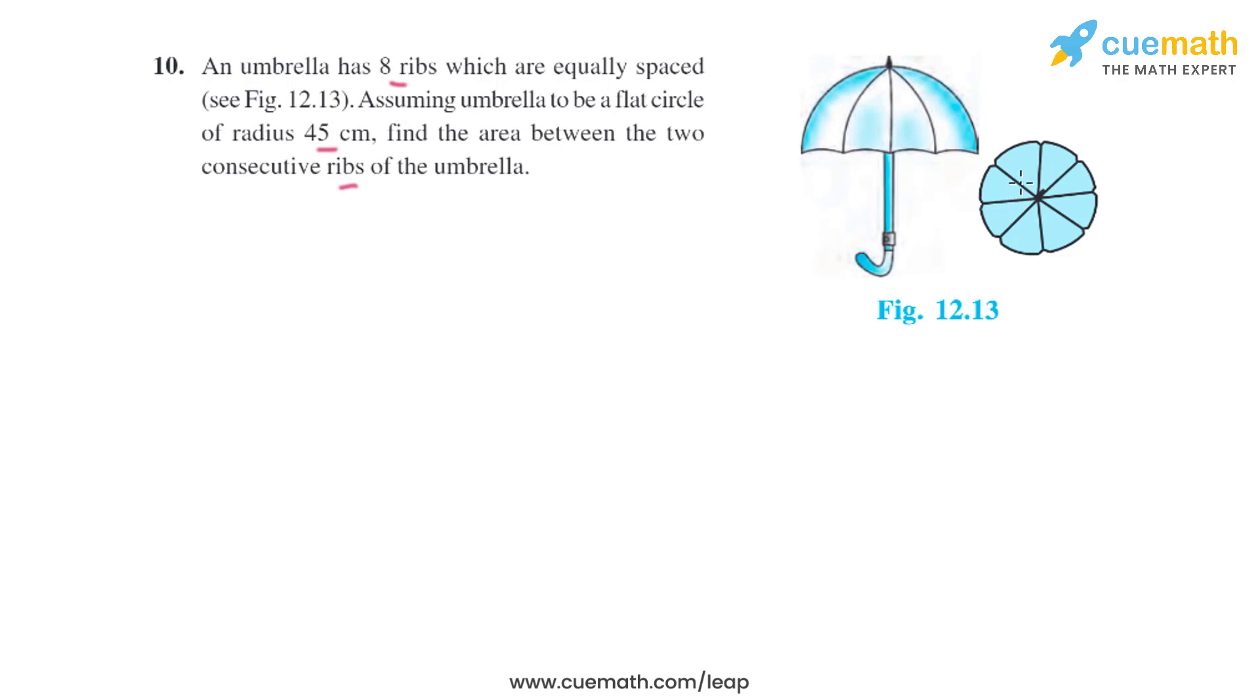So these are the eight ribs: 1, 2, 3, 4, 5, 6, 7, 8, and all of them are equally spaced. We have to find the area between consecutive ribs, so basically we have to find this area between these two consecutive ribs.